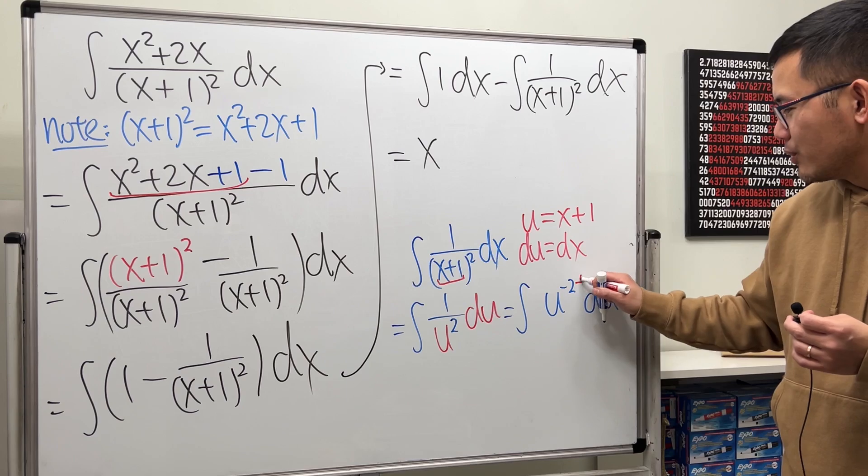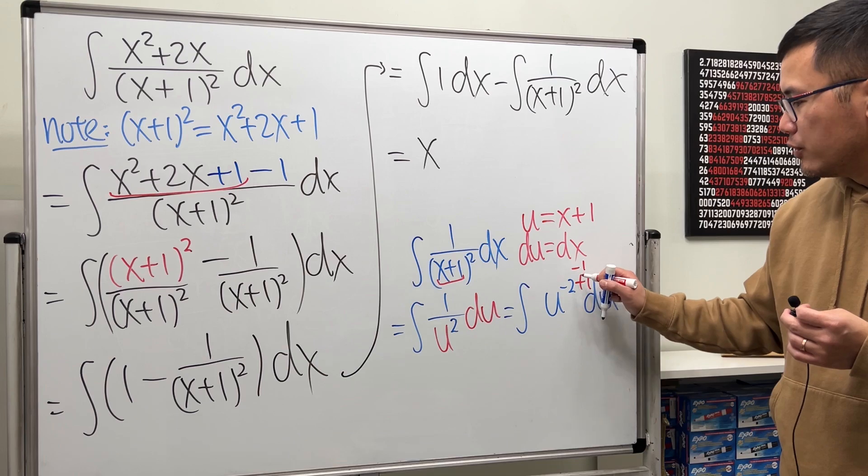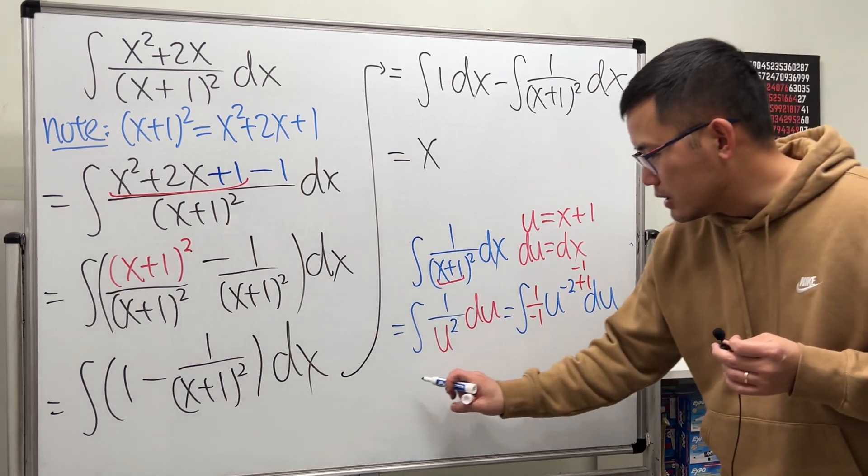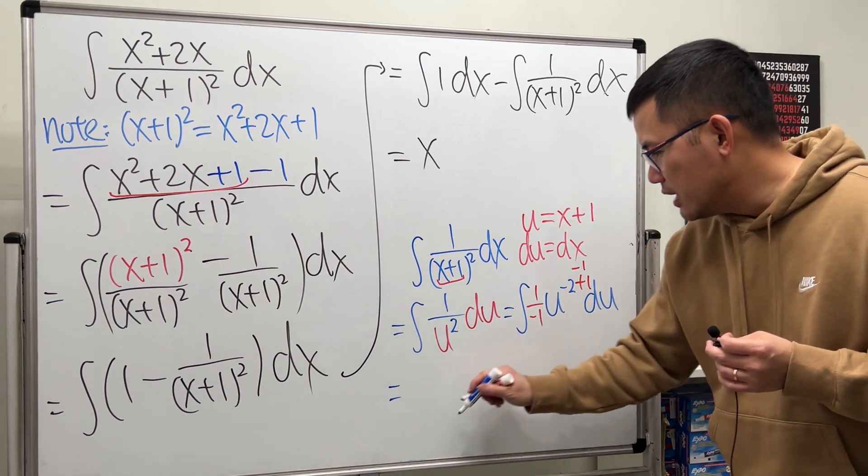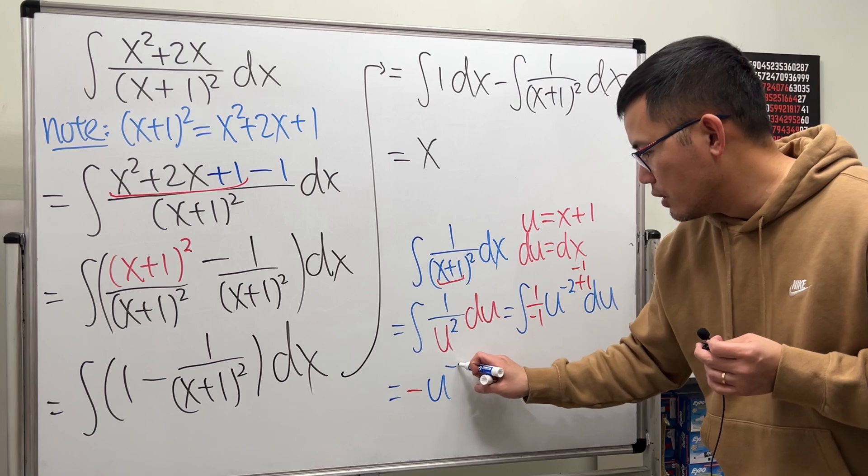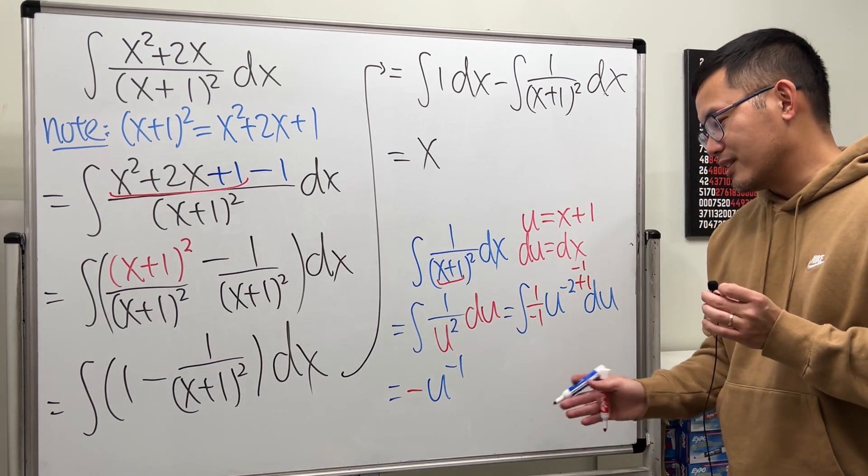So that we can do the reverse power rule. Go ahead and add 1 to the power. Negative 2 plus 1 is negative 1. And then we are going to divide it by the new power, so 1 over negative 1. So the result is going to be we have a negative, and then u to the negative 1 power plus c. Or maybe you can just wait until the very end. It doesn't matter, in my opinion.